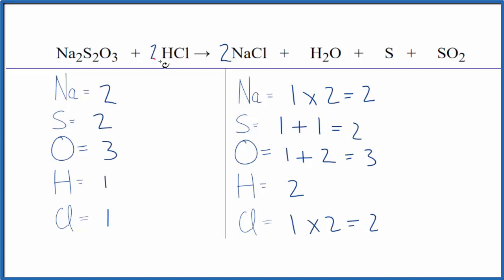Because we could put a two in front of the HCl, we'd have then one times two, that would give us two hydrogens, boom, those are balanced. One times two, that would give us two chlorines, those are balanced, and we're done, that's it.